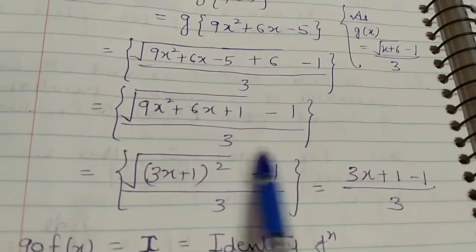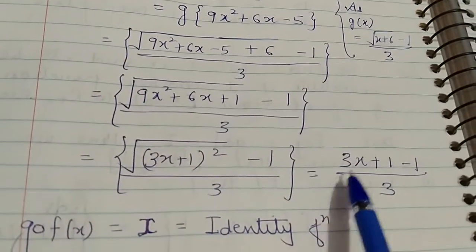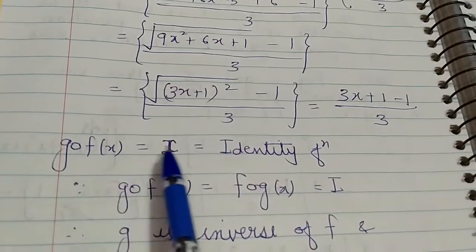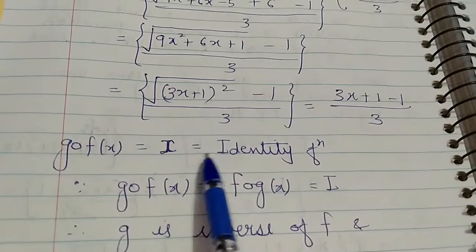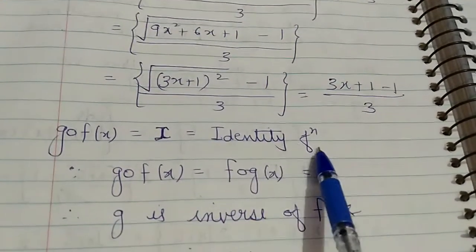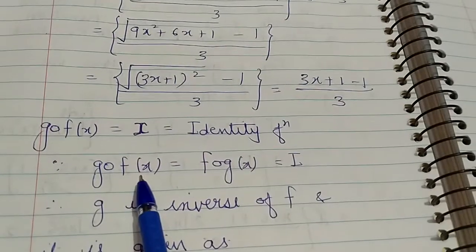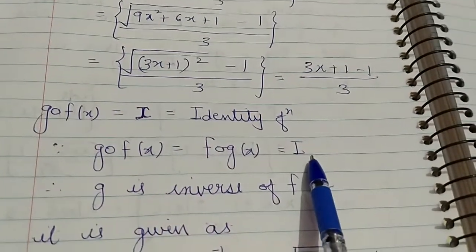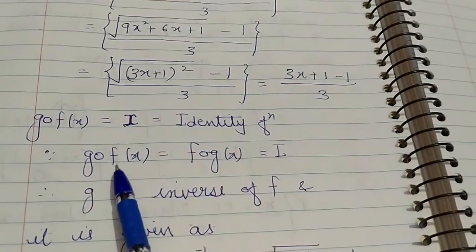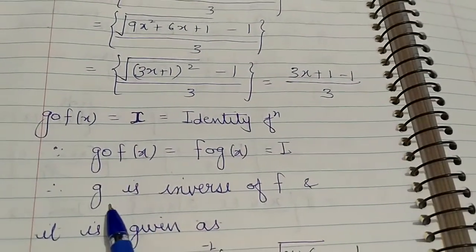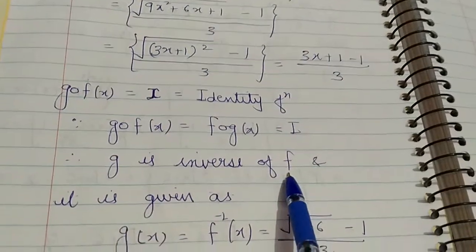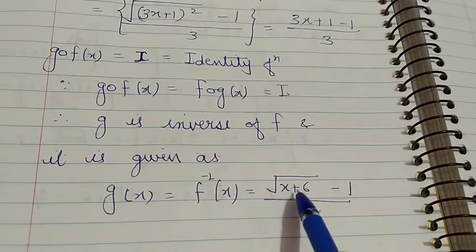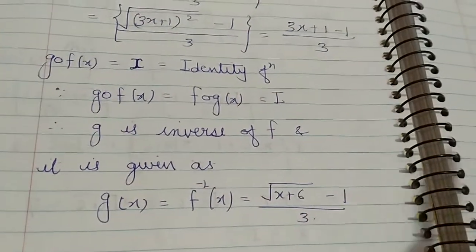After solving, we get (3x + 1 - 1) / 3 = 3x / 3 = x, so g∘f(x) = x, which is again the identity function. Since we have proved f∘g = g∘f = identity function, f is an invertible function and g is the inverse of f, given as f⁻¹(x) = (√(x+6) - 1) / 3, which is the desired result.